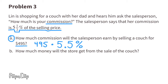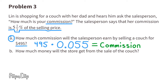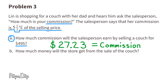To figure out the salesperson's commission, we need to multiply the price of the couch times 5.5%. We need to change the percent to a decimal, so we'll multiply 495 by 0.055. A commission is an amount of money that a salesperson is paid for selling a product. Five and a half percent of 495 is 27.225, which can be rounded up to $27.23.